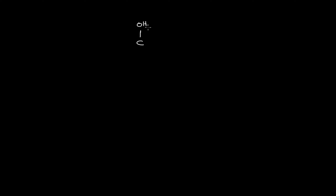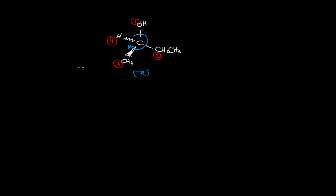Let's consider another example. I have a carbon with OH, CH3, hydrogen to the back, and an ethyl group. Assigning priorities gives one, two, three, and four. Looking at the rotation — one, two, three, four — I'm going clockwise. Clockwise means R. R in Latin means 'rectus,' which means right-handed, or rotating to the right side.